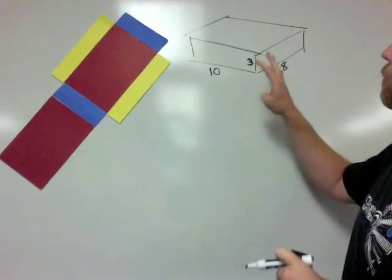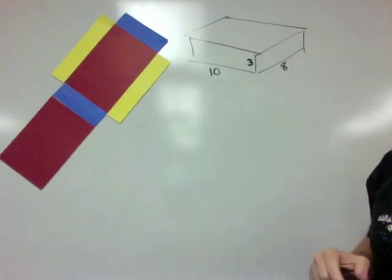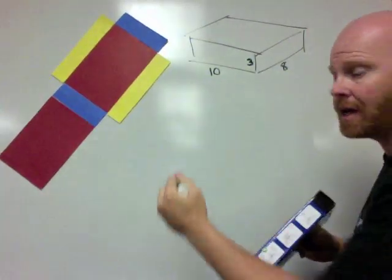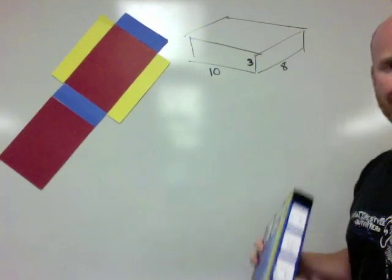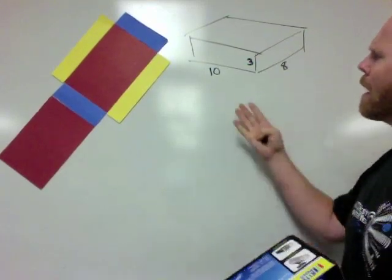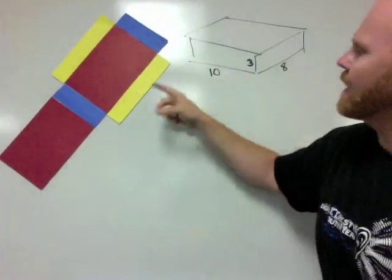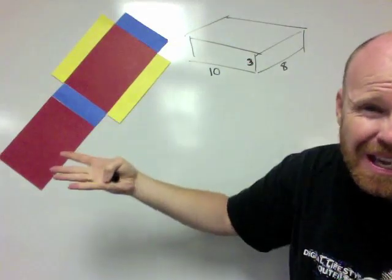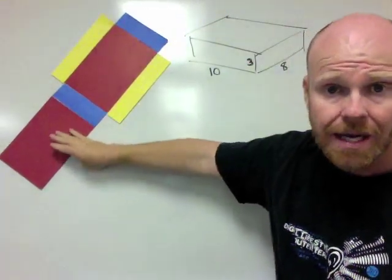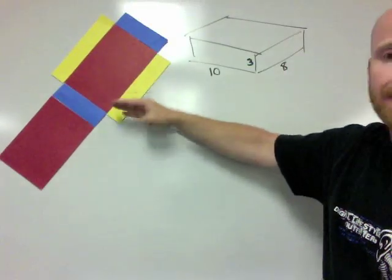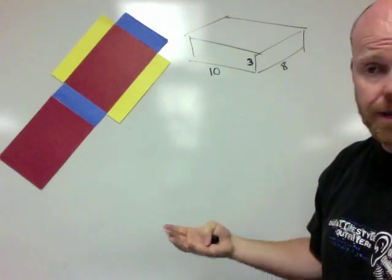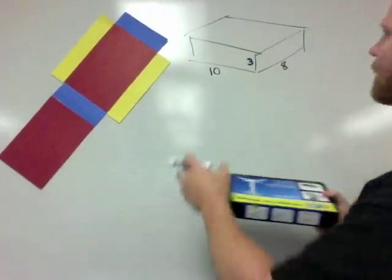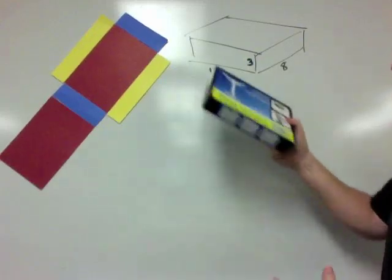And so we've got our rectangular prism, it's a 3 by 8 by 10, and we want to find the surface area, which means we're going to find the area of each of the six sides and then find the sum. But we can kind of work in half a little bit by understanding that there's two reds, two blues, and two yellows. So really, if we find the area of one red, one blue, and one yellow, find the sum of that, all we have to do to find the surface area of the rectangular prism is double that answer. So we're going to find the area of three faces of this rectangular prism.